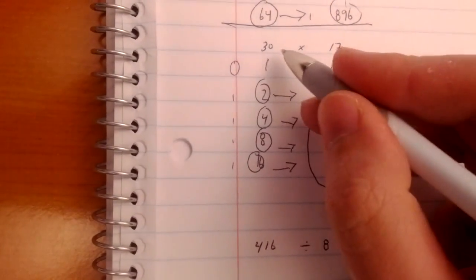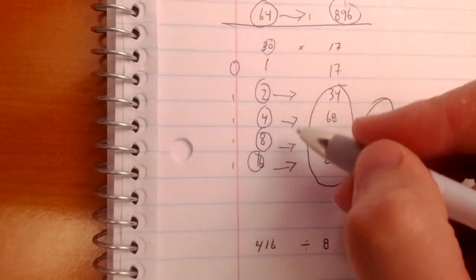And again, 3 times 17 is 51, add your 0 back, 510. So I know that's right.